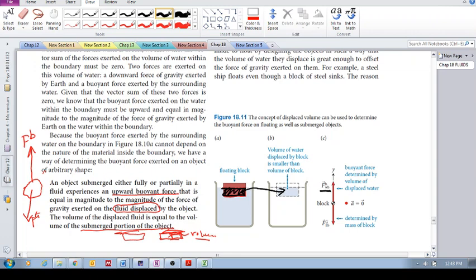But if the block itself, if the force of gravity on that block, the original block with the original density, is greater than that upward buoyant force, then of course it will sink. If that gravitational force is smaller than that upward buoyant force, then it will rise to the surface.